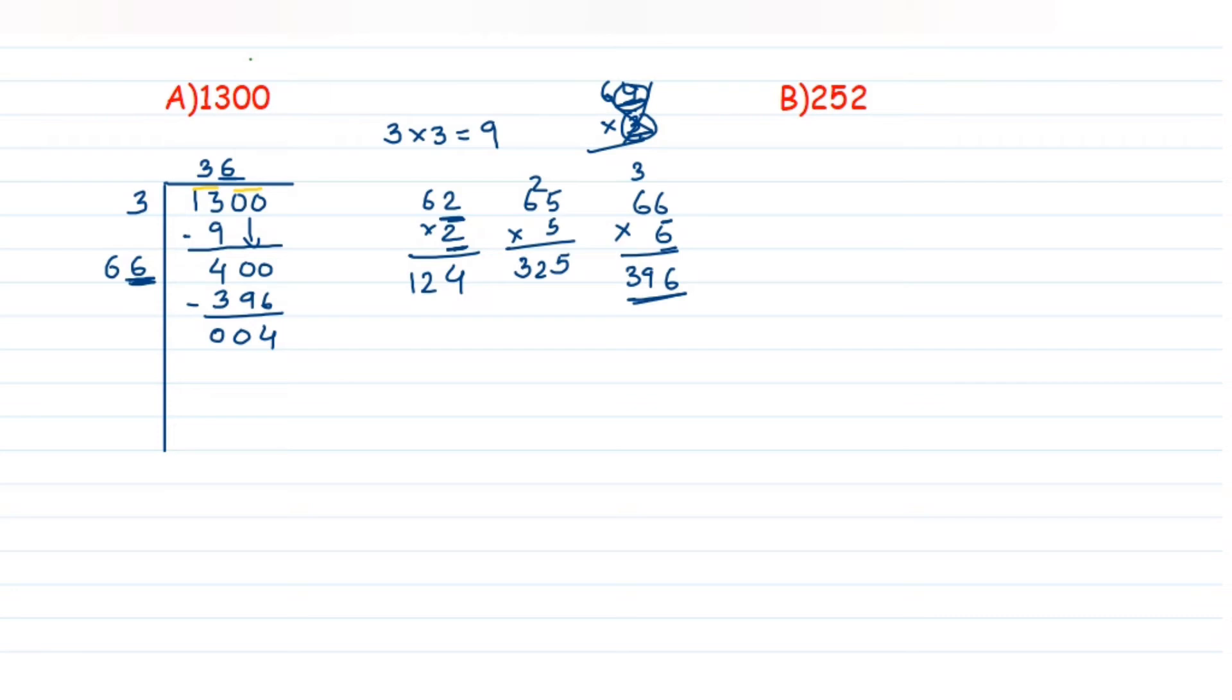Which means that whenever you're getting remainder, means this number is not a perfect square, so that is why they're asking you which number to be added. So after division we can conclude that this quotient what we got, which is 36. So this 36 square is actually less than 1300. And what is 36 square? It is actually 1296. 36 square is 1296, which is obviously less than 1300. So after 36, the next perfect square would be 37.